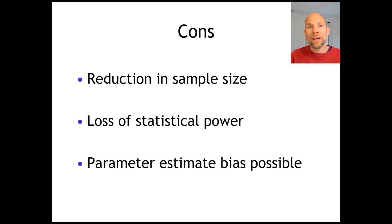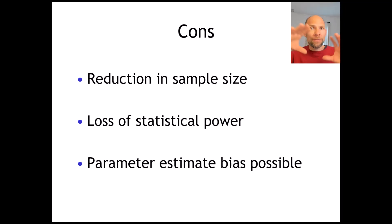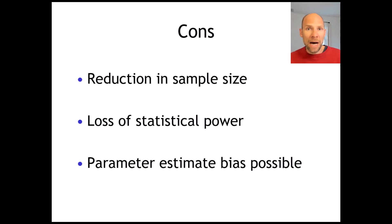For example, if you have a thousand cases and only three are missing completely at random, you may not care that you only have 997 left, because you still have enough statistical power and it only minimally affects your standard errors and confidence intervals. That would be the only situation where listwise deletion might be fine — you have so much data left and your remaining data is representative of the full sample.